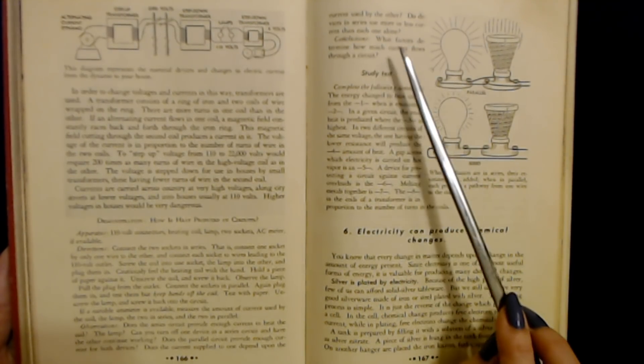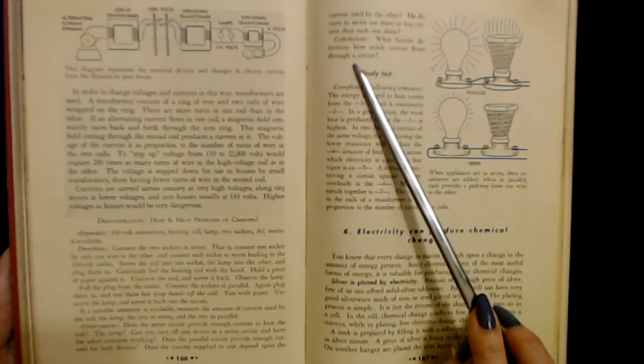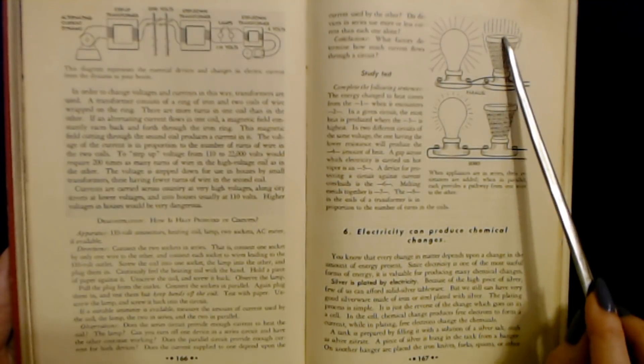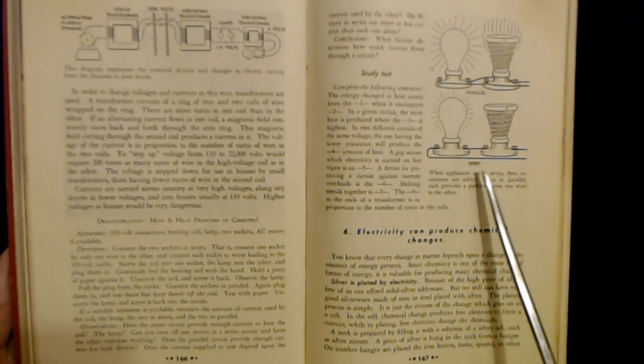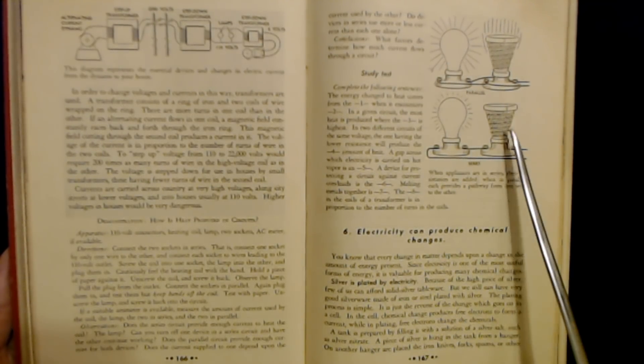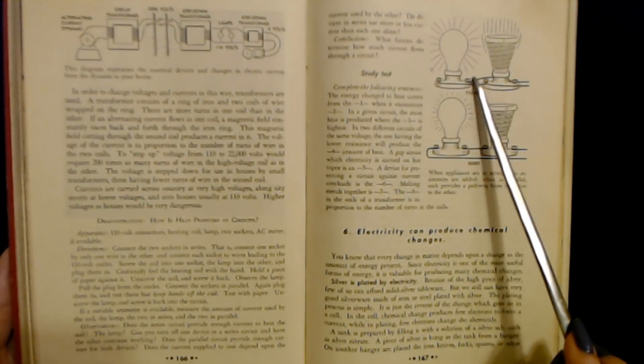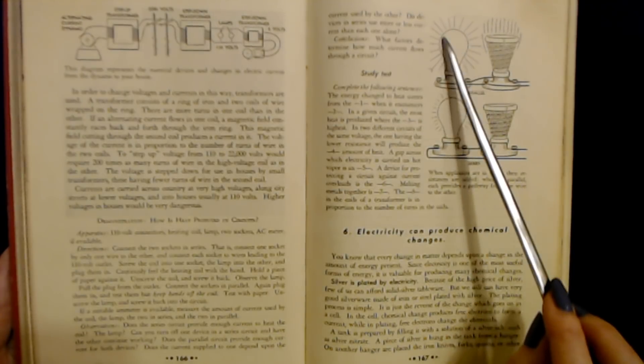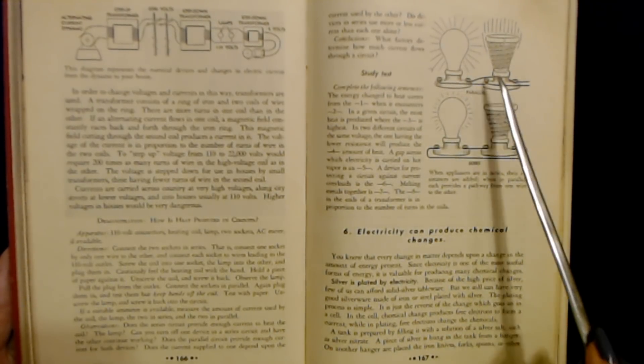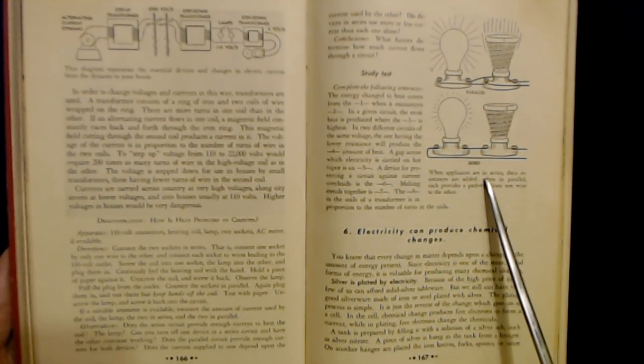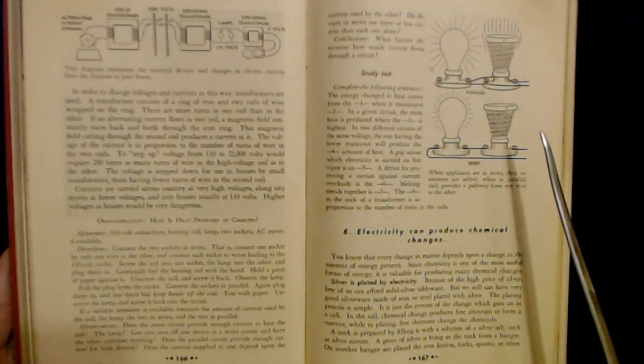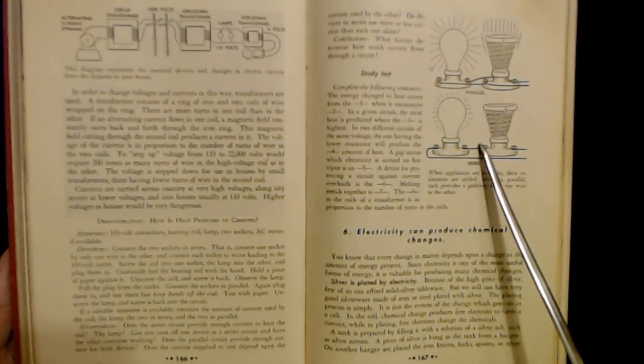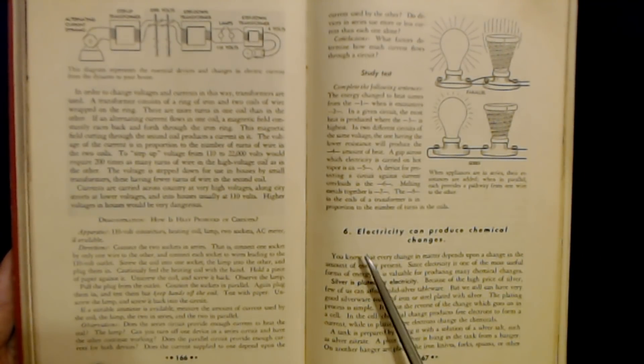And for conclusions, what factors determine how much current flows through a circuit? So here you have parallel where you can see the heat coming off the coil. And in series, there's no heat. You can see the difference in the wires. And there's no heat. So there's going to be heat coming off here and here. But when the appliances are in series, the resistances are added. And when in parallel, each provides a pathway from one wire to the other.